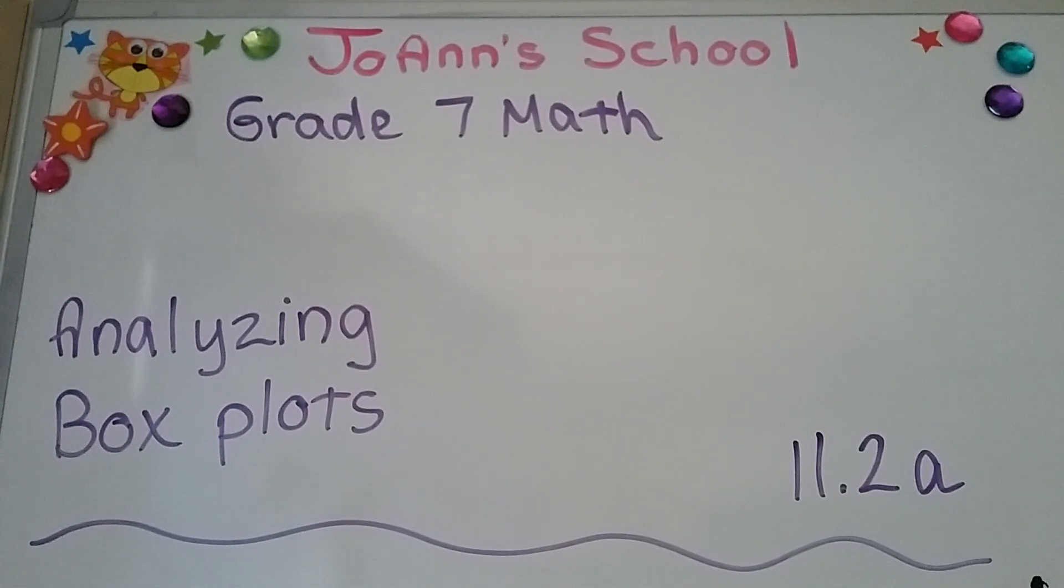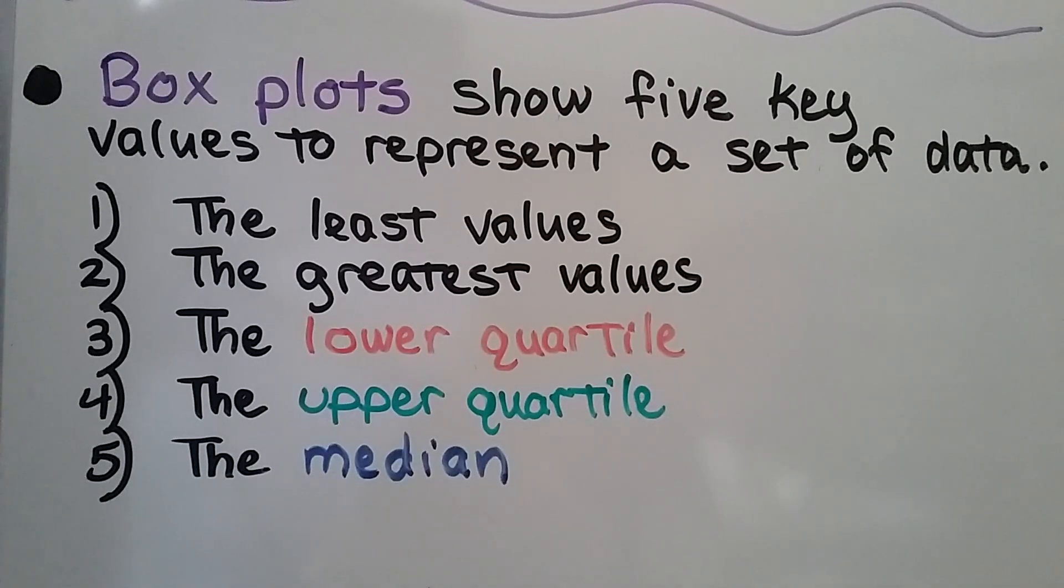Analyzing box plots 11.2a. Box plots show five key values to represent a set of data. They show the least values, the greatest values, the lower quartile, the upper quartile, and the median.